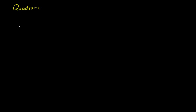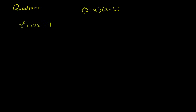In all of the examples we'll do, it'll be x. So let's say I have the quadratic expression x squared plus 10x plus 9, and I want to factor it into the product of two binomials. Well, let's think about what happens if we were to take x plus a and multiply that by x plus b. We'd get x times x, which is x squared, plus x times b, which is bx, plus a times x, plus a times b, which is ab.